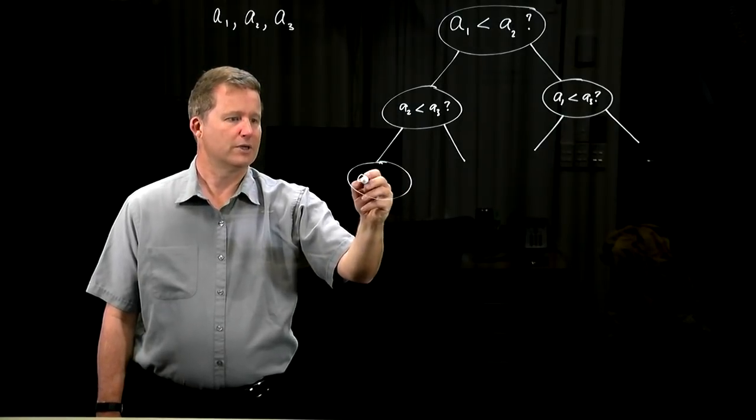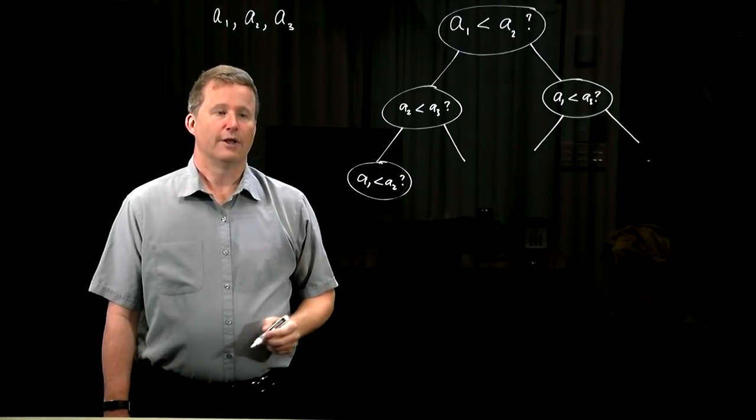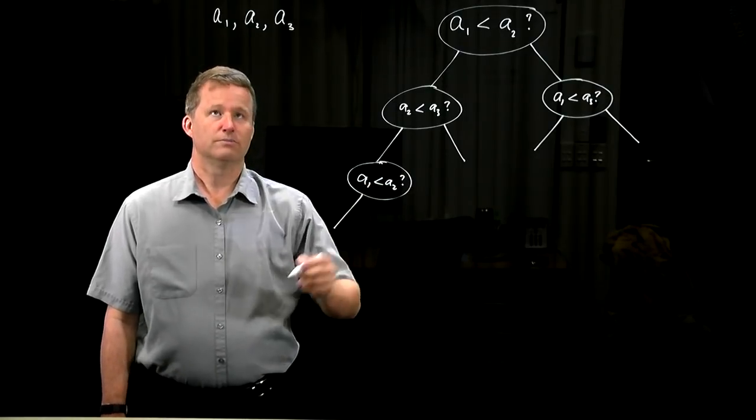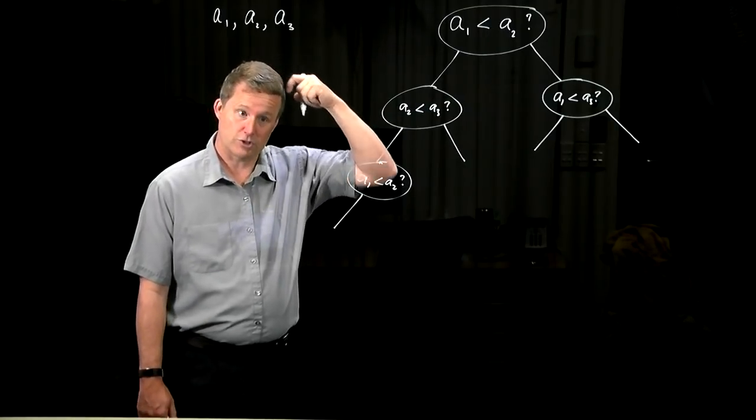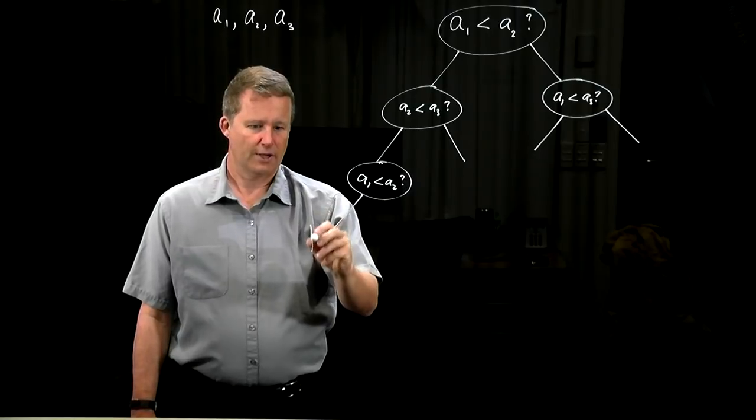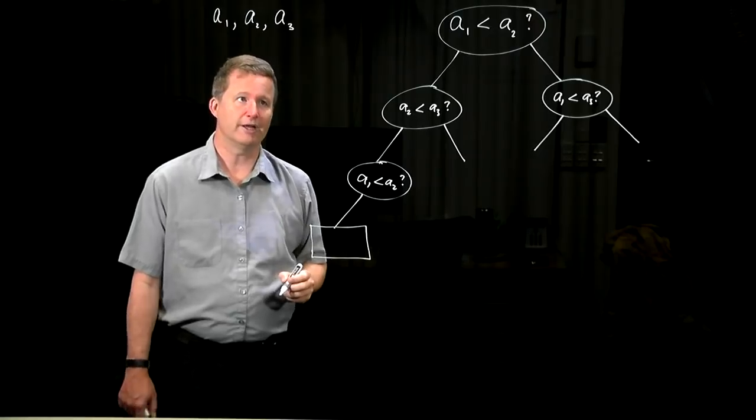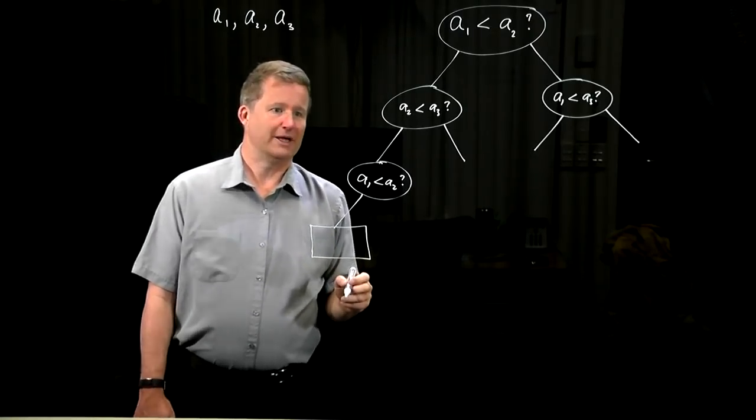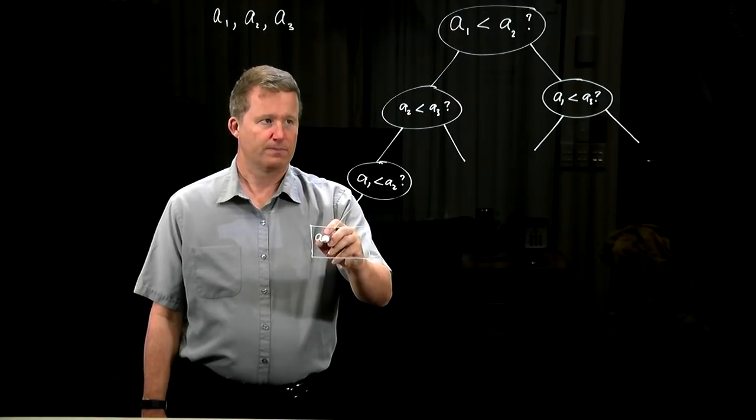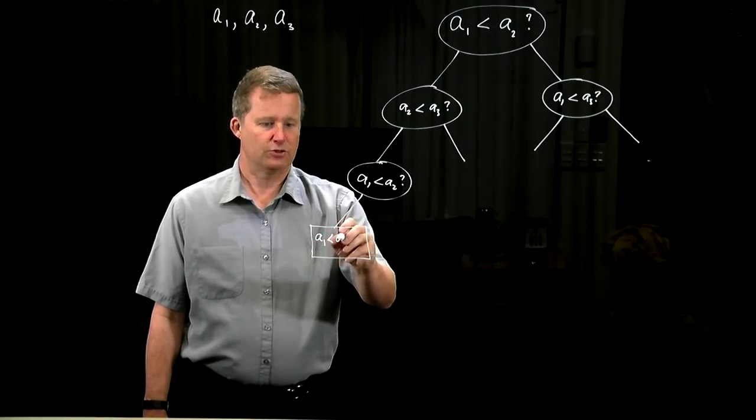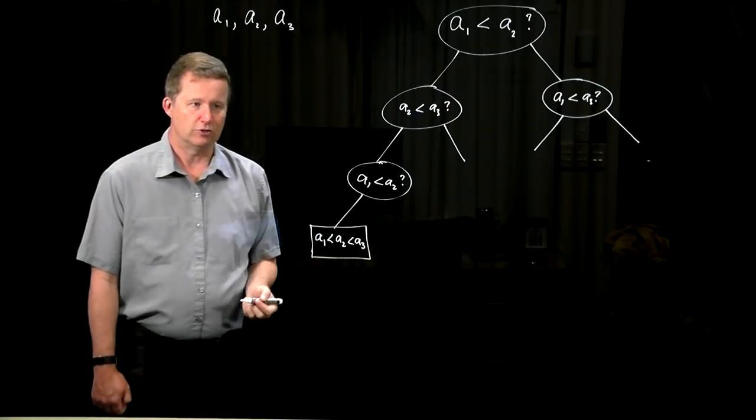And again, we would ask whether a1 is less than a2. And if it was, we don't have to go any further. We stop. And we can stop, and we can actually... That tells us, in fact, that the original ordering must have been that a1 was less than a2, was less than a3. That's the only thing that we could conclude from that.